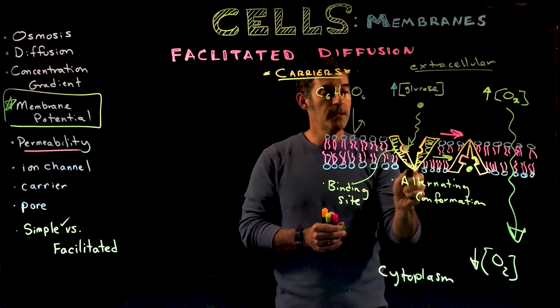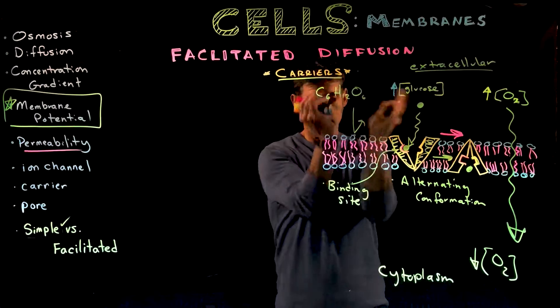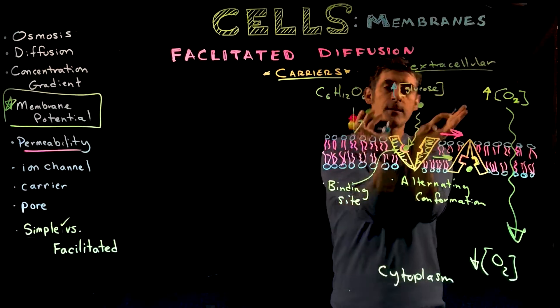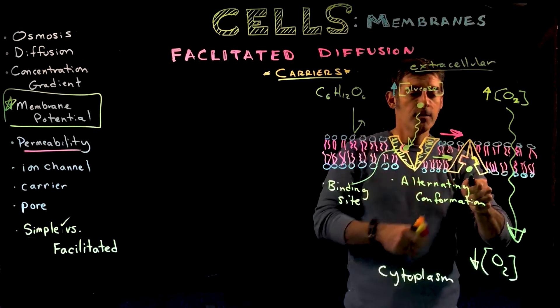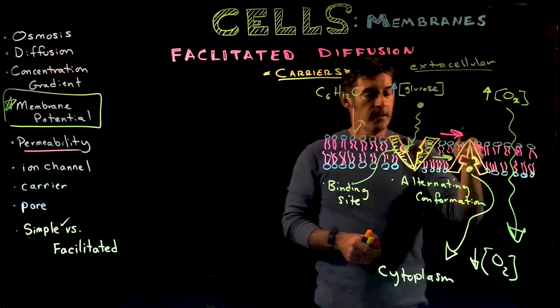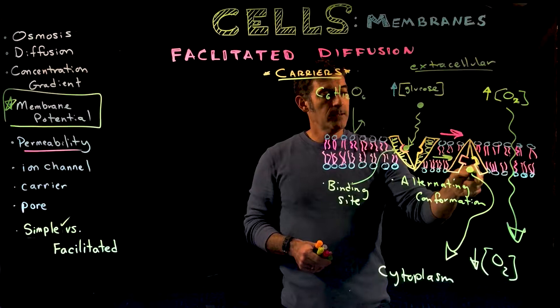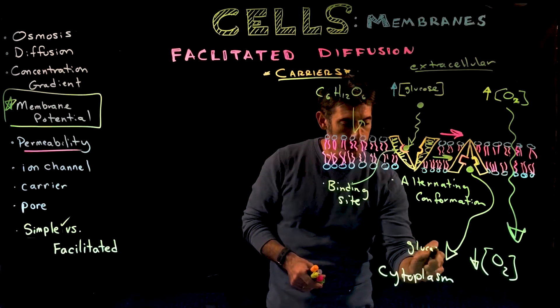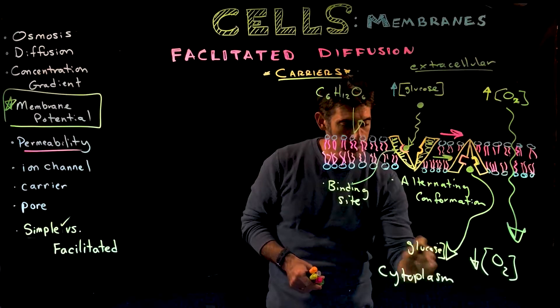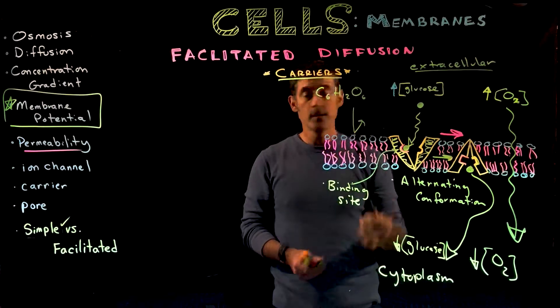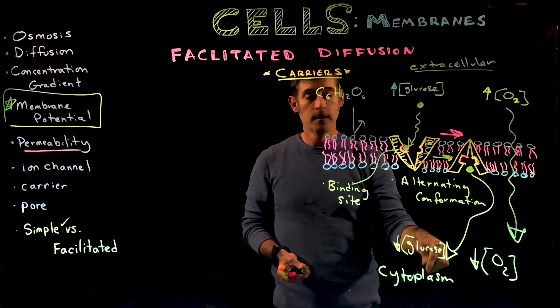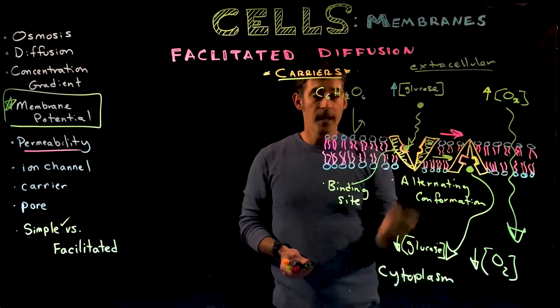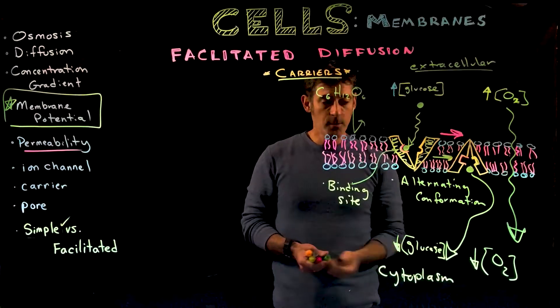The protein changes shape from being open to the outside of the membrane, the extracellular side, to being open to the inside of the cell. The glucose molecule then moves from its area of high concentration to low concentration. It diffuses from high to low, but instead of moving through the phospholipid bilayer, it moves through this carrier protein that changes shape.